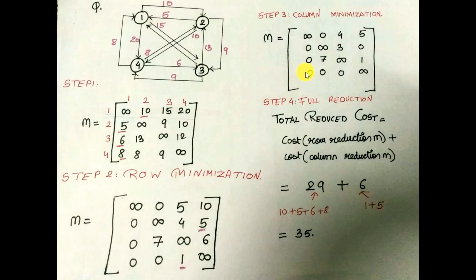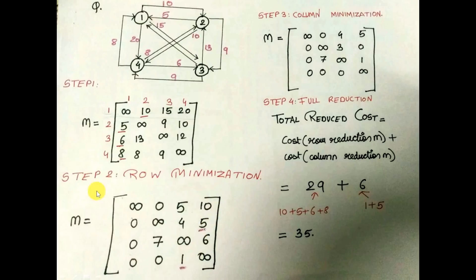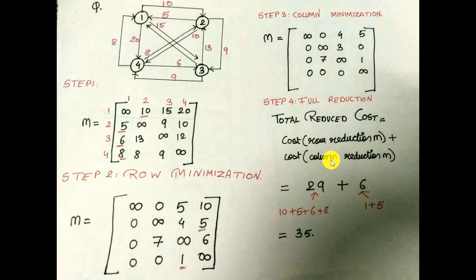After creating the column minimized matrix, we find the total reduced cost by adding up all the elements we have subtracted. In row minimization we subtracted 10, 5, 6, and 8. In column minimization we subtracted 1 and 5. Adding all: 10 plus 5 is 15, plus 6 is 21, plus 8 is 29 — that is the row reduction cost. Column reduction cost: 1 plus 5 is 6. So total reduced cost is 29 plus 6 equals 35.